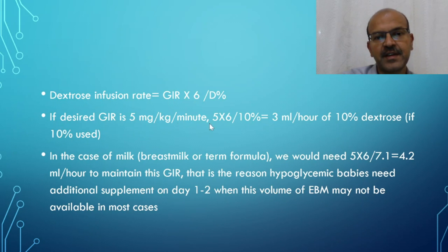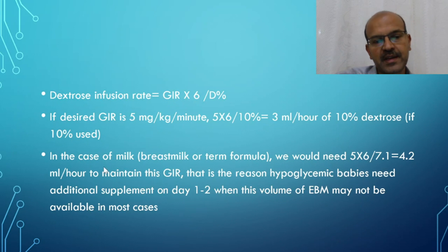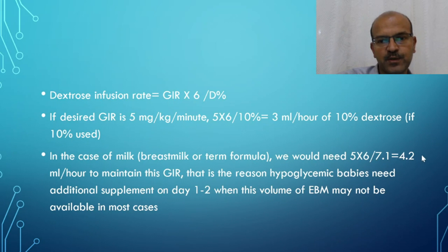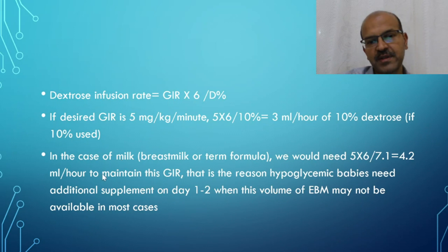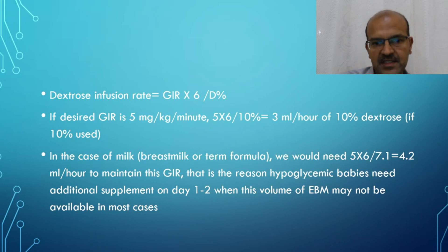If the desired GIR is 5 with 10% dextrose: 5 × 6 ÷ 10 = 3 ml/hour. For milk (7.1% dextrose): 5 × 6 ÷ 7.1 = 4.2 ml/hour, compared to 3 ml for dextrose. If a hypoglycemic baby needs 4–5 mg/kg/min, approximately 4 ml/hour of milk is needed — a large volume when establishing lactation. This is why hypoglycemic babies may need additional supplementation on day one or two, while breastfeeding is being established.